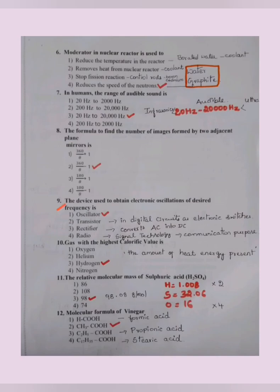The device used to obtain electronic oscillations of desired frequency is nothing but oscillator. Easy question. Let's also check out the other answers and their functions also. If it is a transistor, transistors are used in digital electronic circuits as switches, on and off switches. Rectifier mainly converts AC into DC, alternating current into direct current. And radio - it works on radio signals and is based on signal technology that is used for communication purpose.